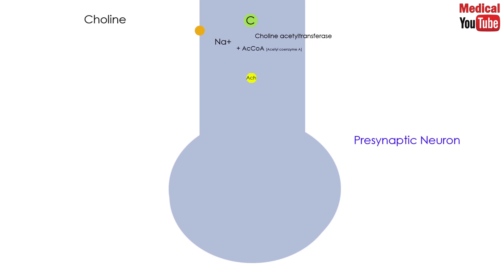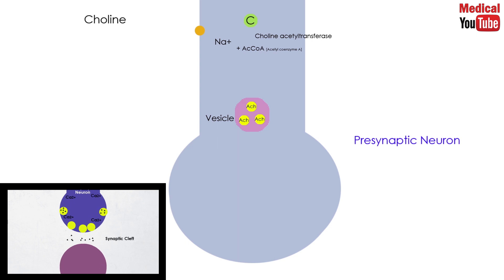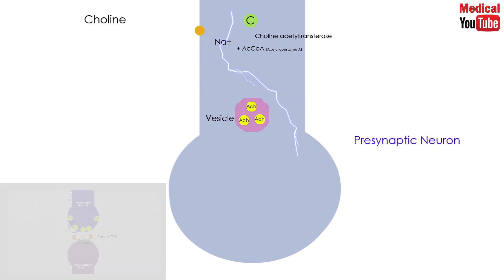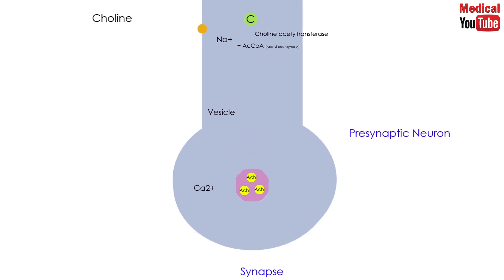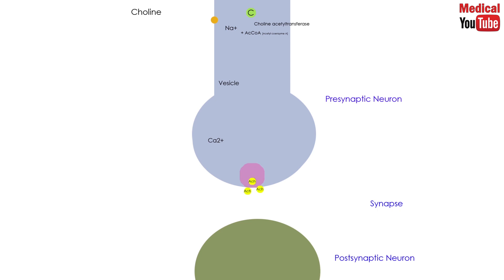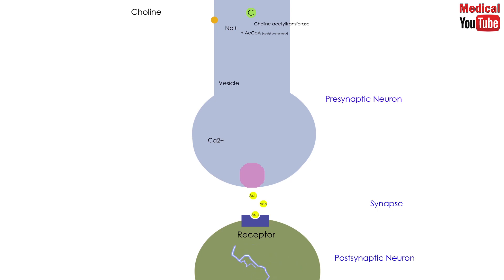Then acetylcholine is packaged and stored into presynaptic vesicles. When an action potential arrives at the nerve ending, voltage-sensitive calcium channels on the presynaptic membrane open, causing an increase in the concentration of intracellular calcium. Elevated calcium levels promote the fusion of synaptic vesicles with the cell membrane and the release of their contents into the synaptic space. Then acetylcholine diffuses across the synaptic space and binds to postsynaptic receptors on the target cell. The postsynaptic cholinergic receptors on the surface of the effector organs are divided into two classes: muscarinic and nicotinic.